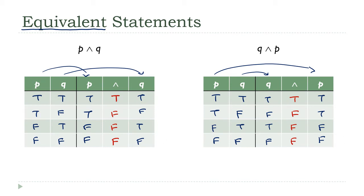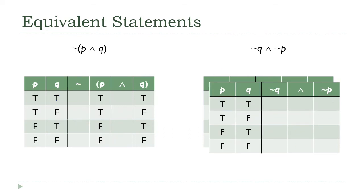So, now compare this column to this column. They are the same. We always get the same results for these two statements, so I would say they are equivalent, and the symbol we use for that is an equal sign. It looks a lot like an equal sign, but it's got three lines instead of two.